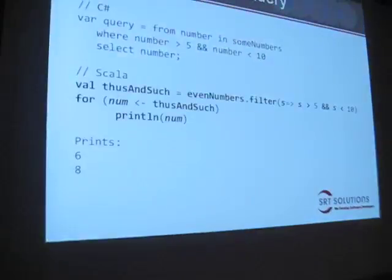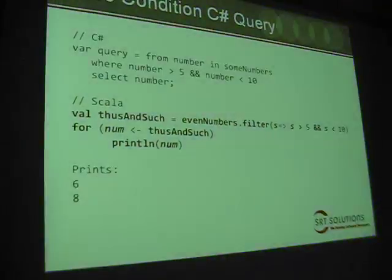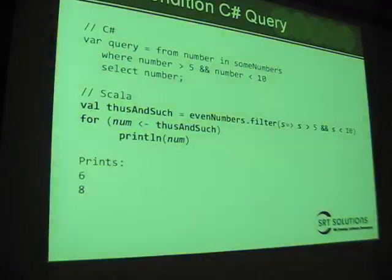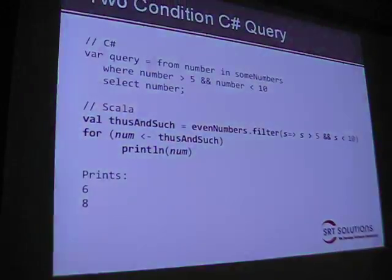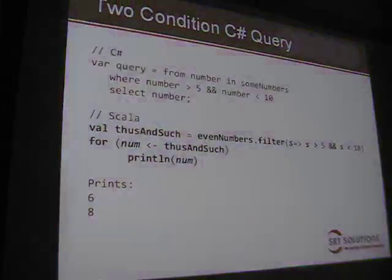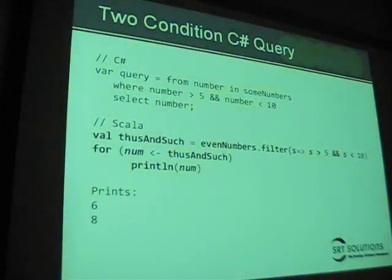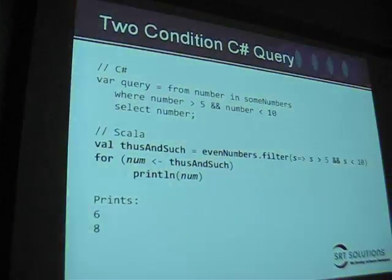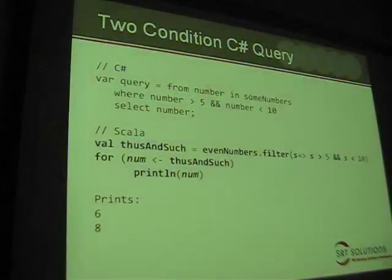Here's another example where we're going to use two conditions instead of just one. We're going to just grab the numbers between five and ten. At the top it's very familiar with what we did previously. At the bottom it's just a little addition to our filter — grabbing all even numbers S such that S is greater than five and S is less than ten.